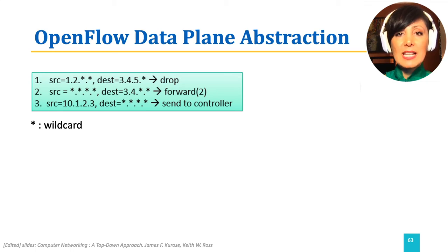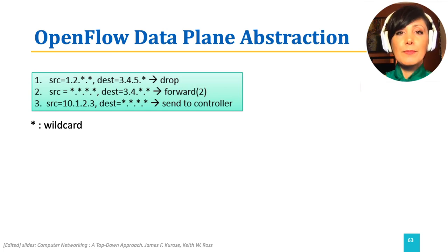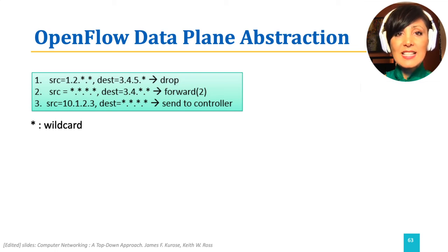The second rule says: regardless of where a packet is coming from, if its destination has the first 16 bits as 3.4, forward the packet to port 2. Rule 3 says: if a packet is coming from 10.1.2.3, regardless of its destination, send it to the centralized controller.